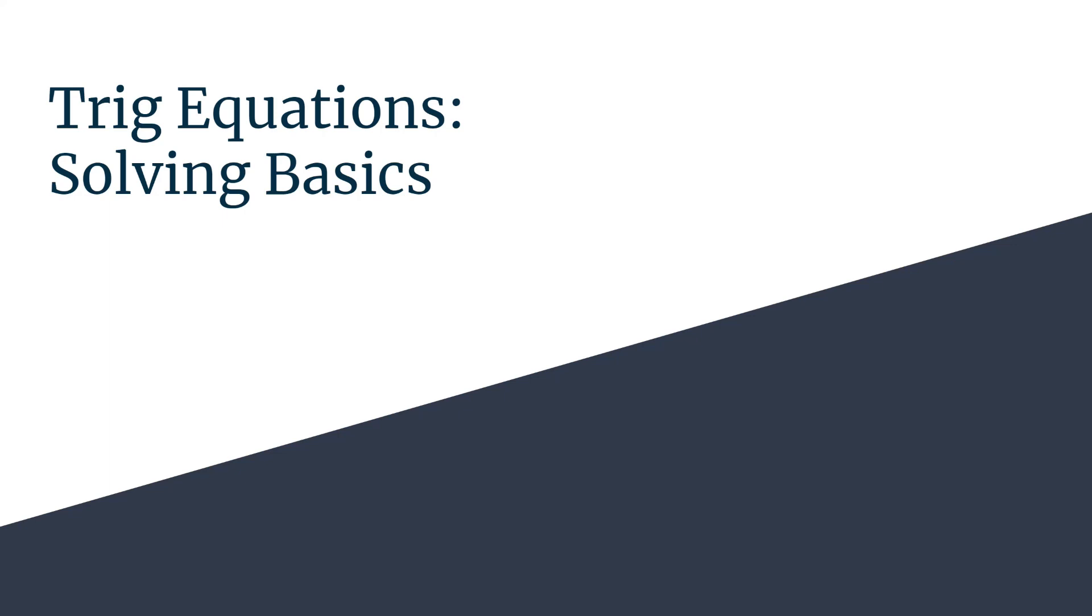In this video, we're going to look at some solving basics for trig equations, and specifically we'll look at cosine theta equals negative square root 2 over 2.